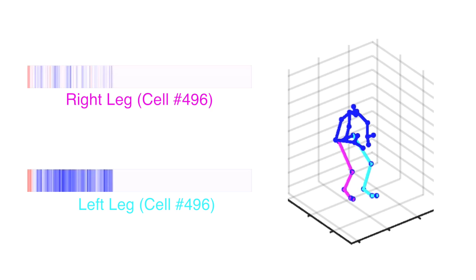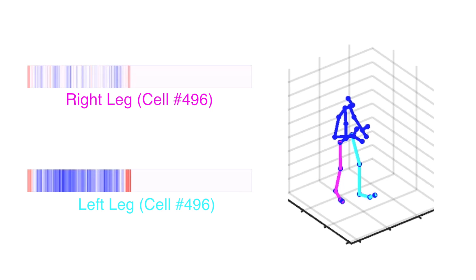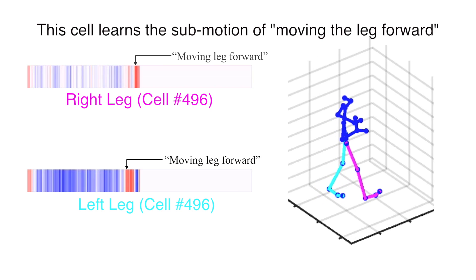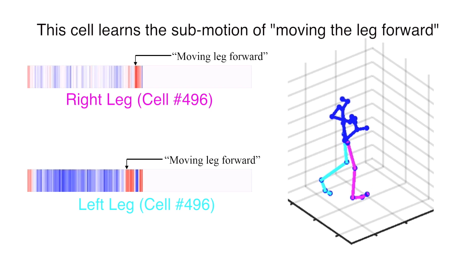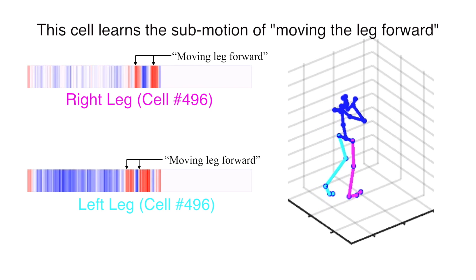Similarly, a cell in the LSTM modeling the legs fires in response to the forward movement of the legs. As the subject walks, the cell fires alternatively for the left leg and the right leg.